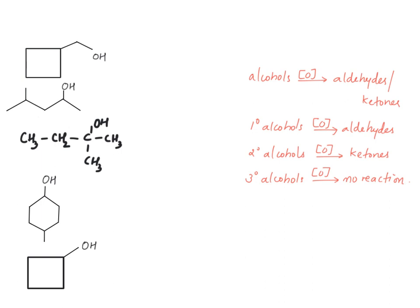The first structure is a primary alcohol, so in this case what we will get is the corresponding aldehyde, and this is the line and angle structure of it.